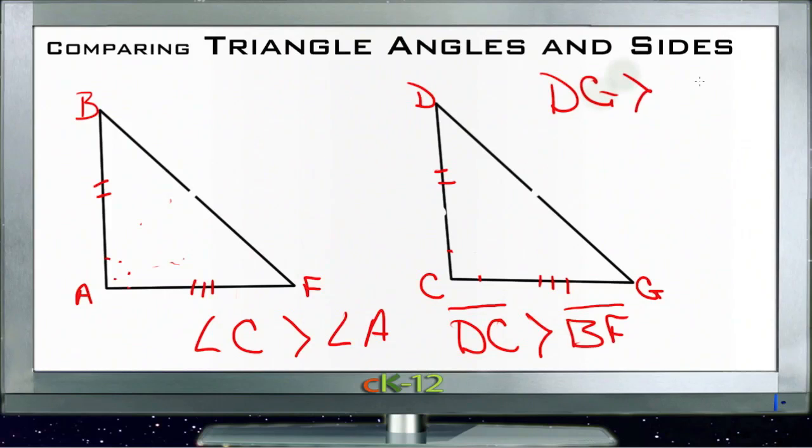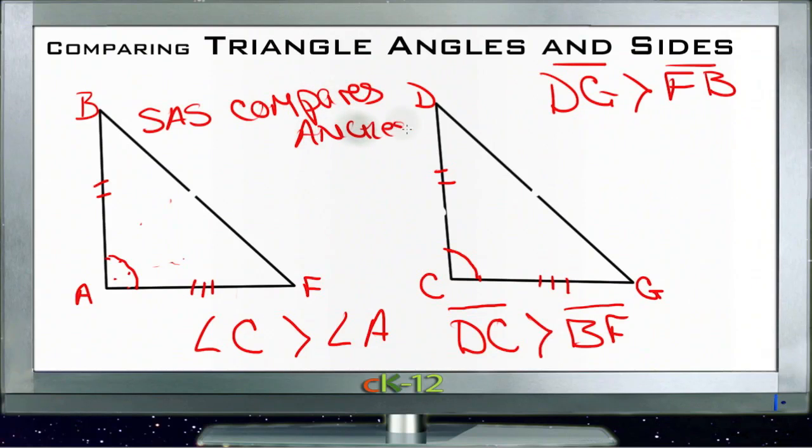then you would know that C was greater than A, working backwards from that theorem. That's the SSS inequality theorem. Instead of just having the converse, we have the SAS theorem which compares the angles, and the SSS theorem which compares the sides.